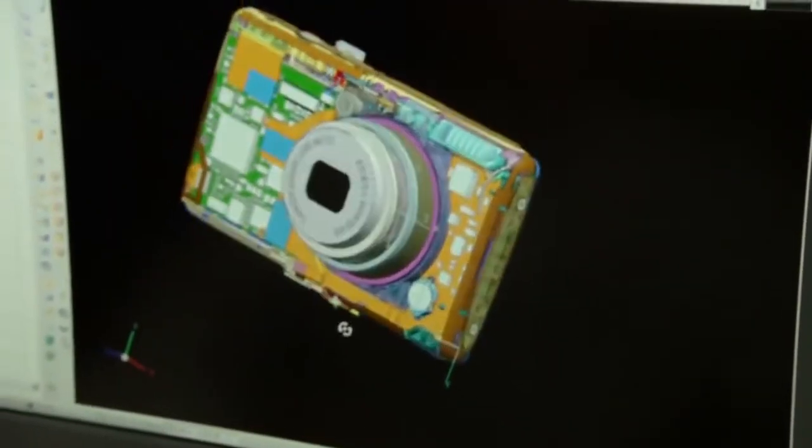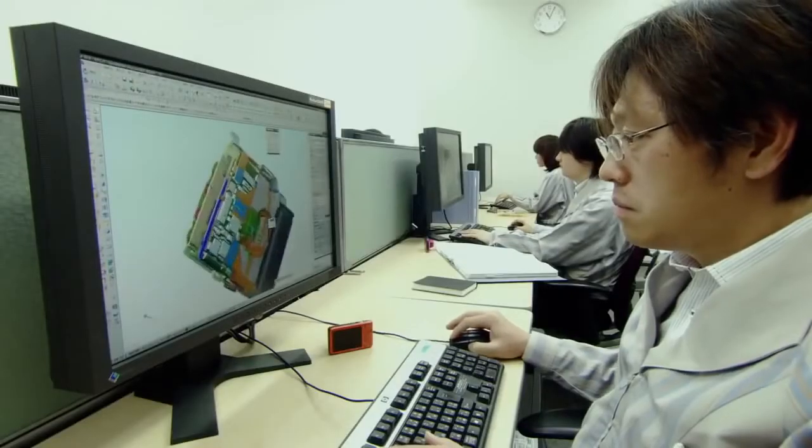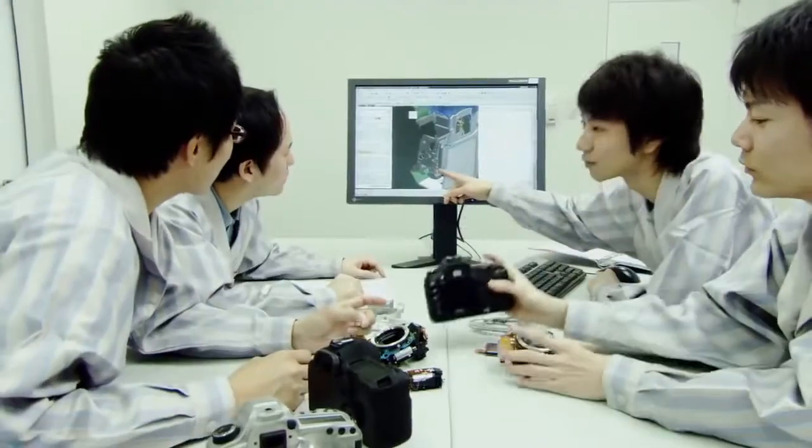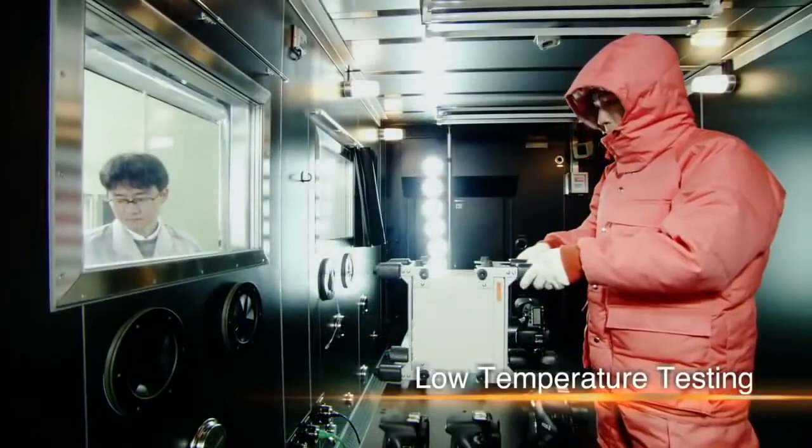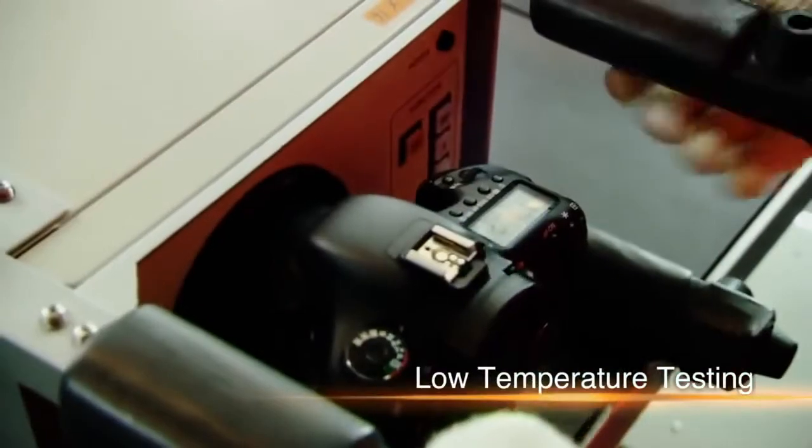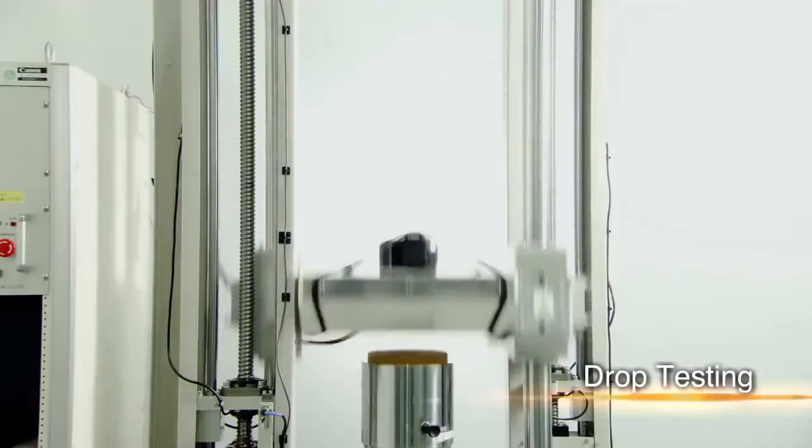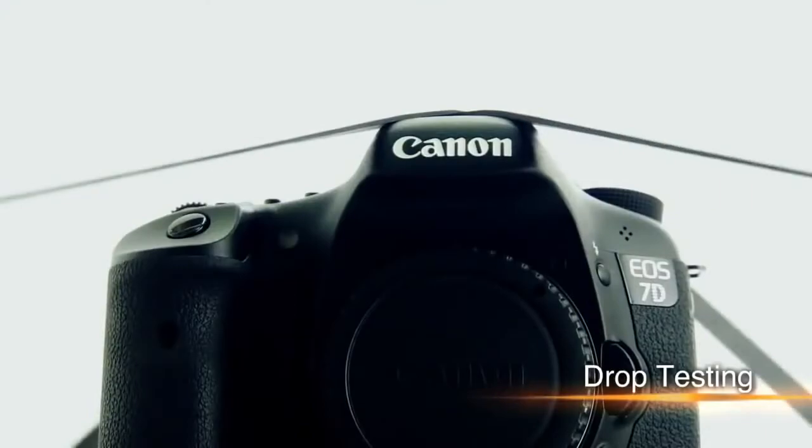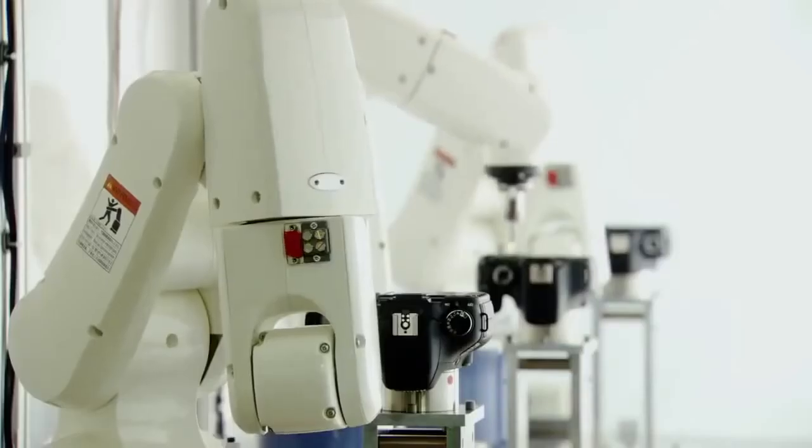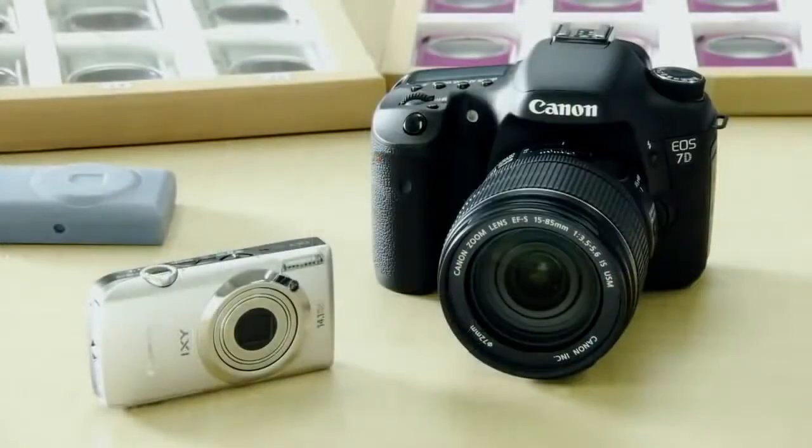Canon employs 3D computer-aided design to speed up the process by reducing the need for trial production and prototypes. After repeated verifications, a digital camera is developed. But before being commercialized, it undergoes rigorous testing. It's dropped over and over, and its buttons are pressed tens of thousands of times, until Canon believes it has a finished product. Now the camera's ready for production.